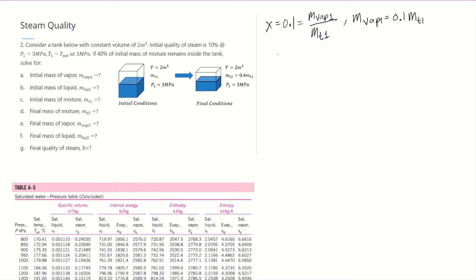Also, (1 - x) equals Mliquid1 over MT1. So Mliquid1 is equal to (1 - x) or 0.9 times MT1. We now have these two expressions.